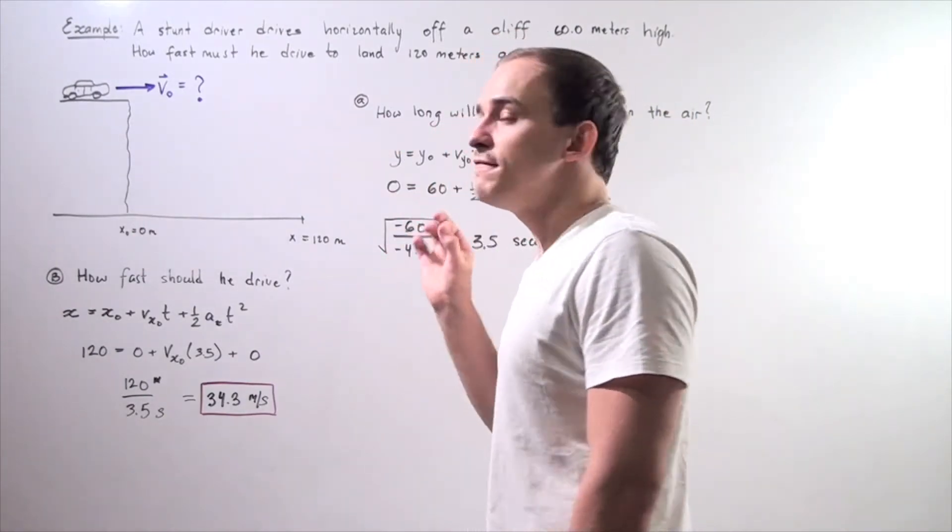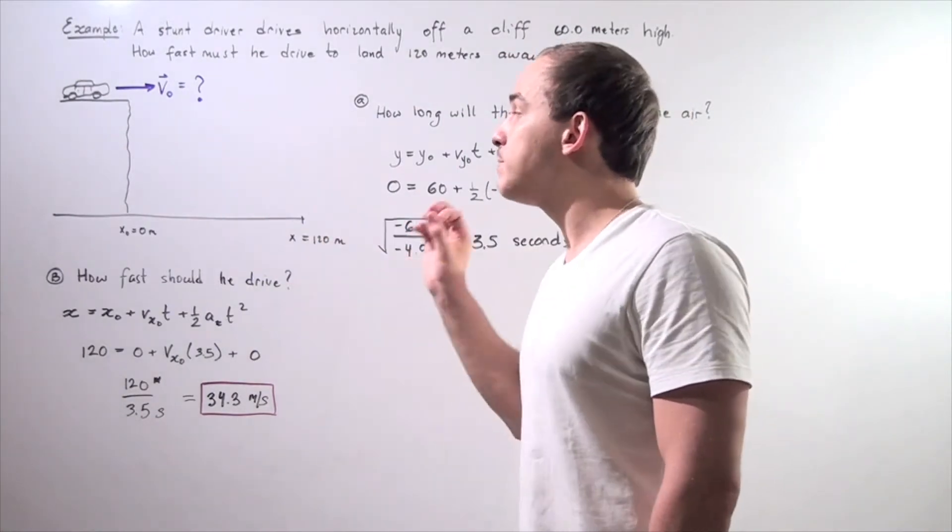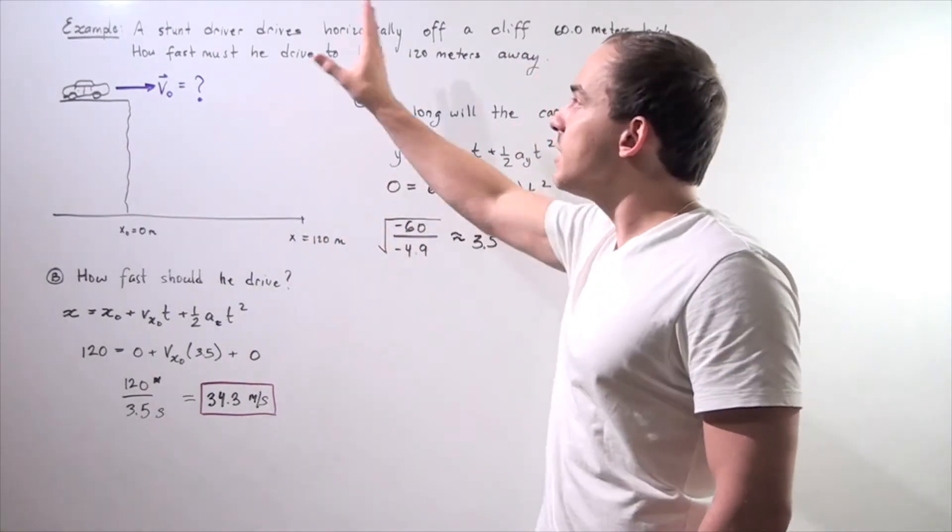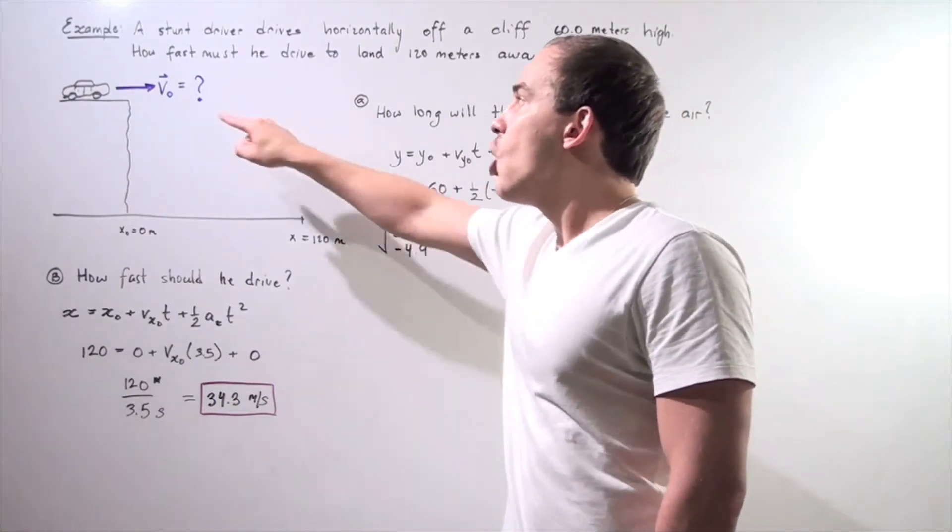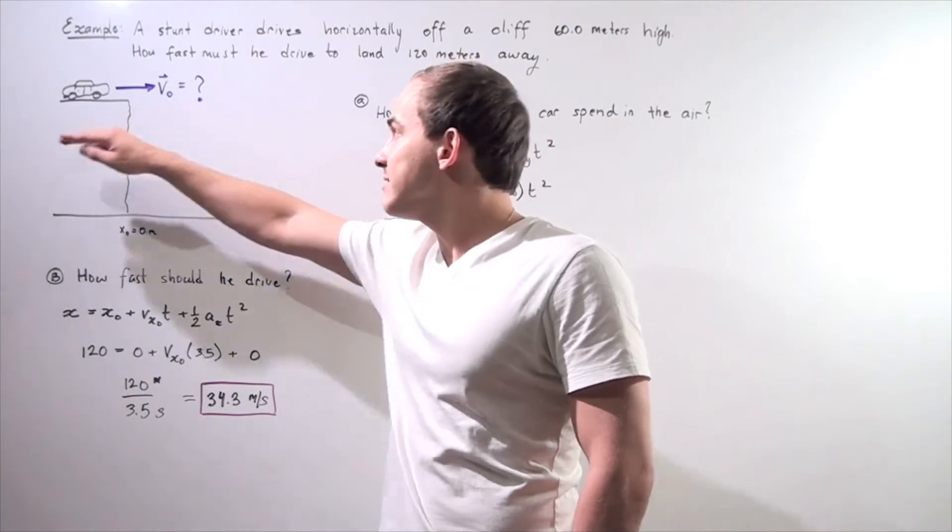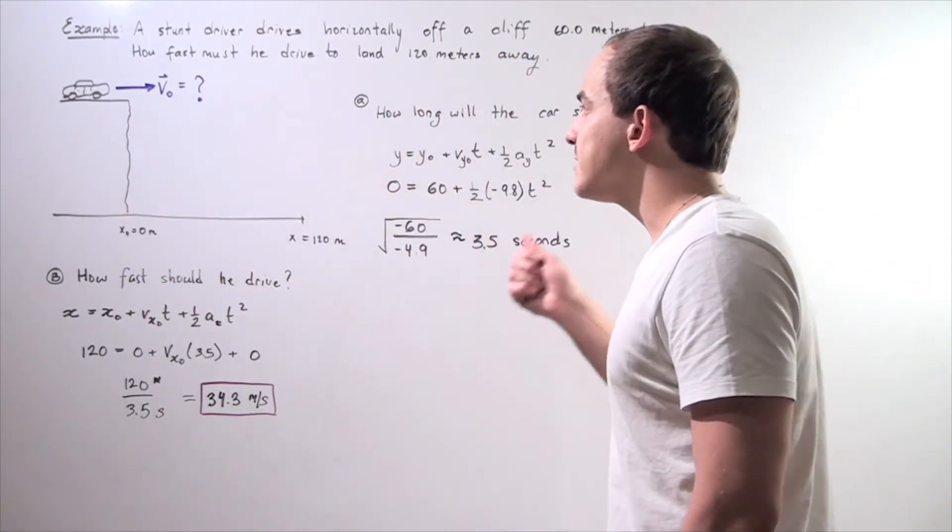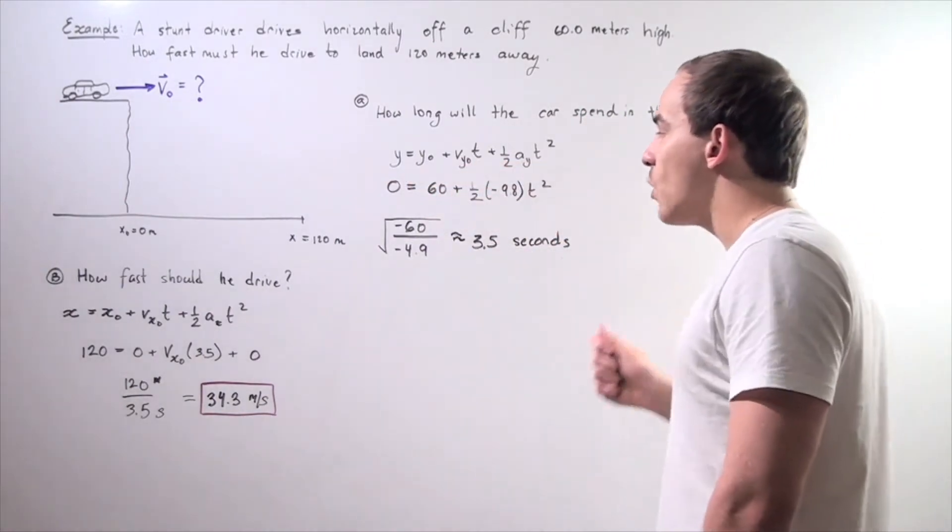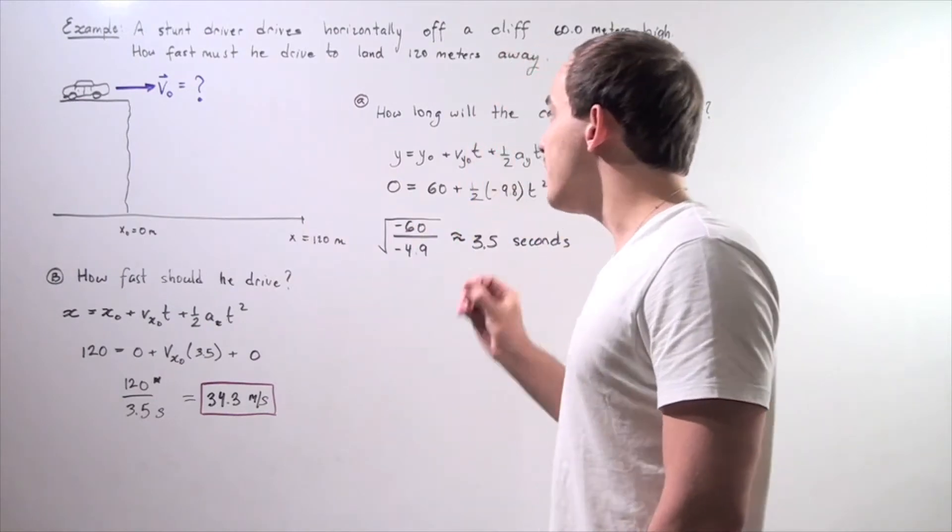So let's begin by finding what the time is or how long our car spends in the air given the above information. That time will help us find what this initial velocity along the x-axis is. So in order to find the time, we have to use the following equation. So our y-final, which we set to be 0 meters,